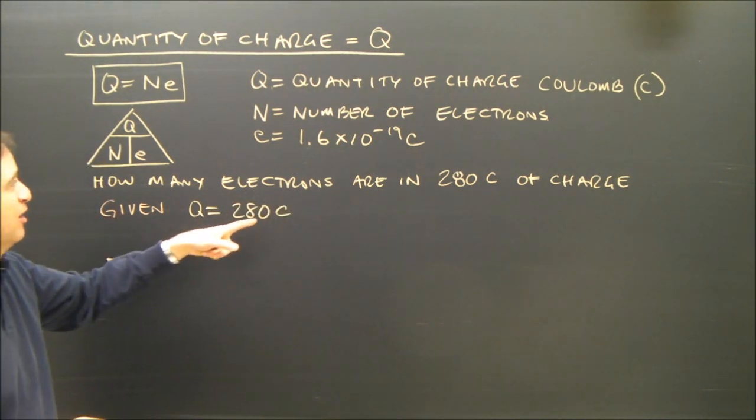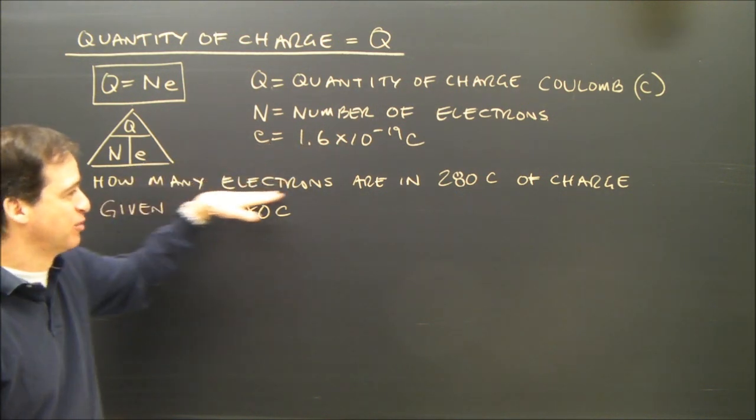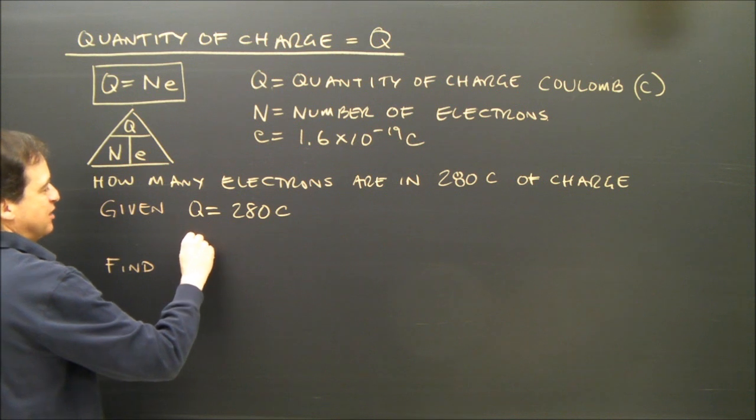And we want to know how many electrons, so that's the number. Well, this is a constant. It's given. It's usually not written in the question. So it is a given.